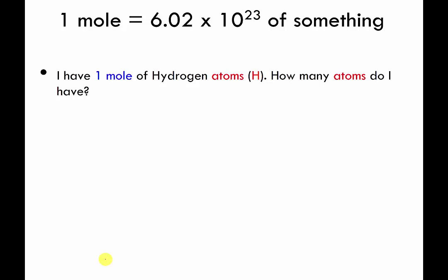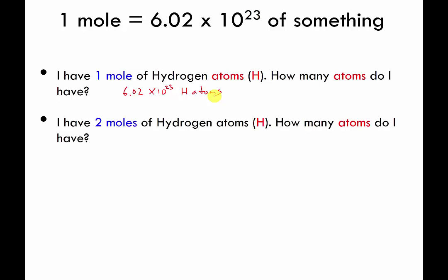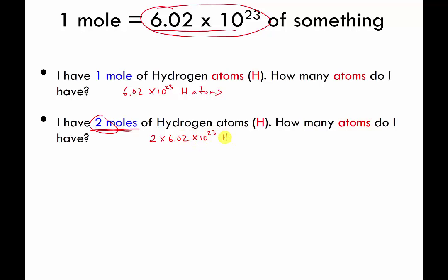More drills. I have one mole of hydrogen atoms — how many atoms do I have? I have 6.02×10²³ H atoms. Now something changed: I have two moles of hydrogen atoms — how many hydrogen atoms do I have? I have this number times 2, because I have two sets of this number, so it's going to be 2 times 6.02×10²³ H atoms.